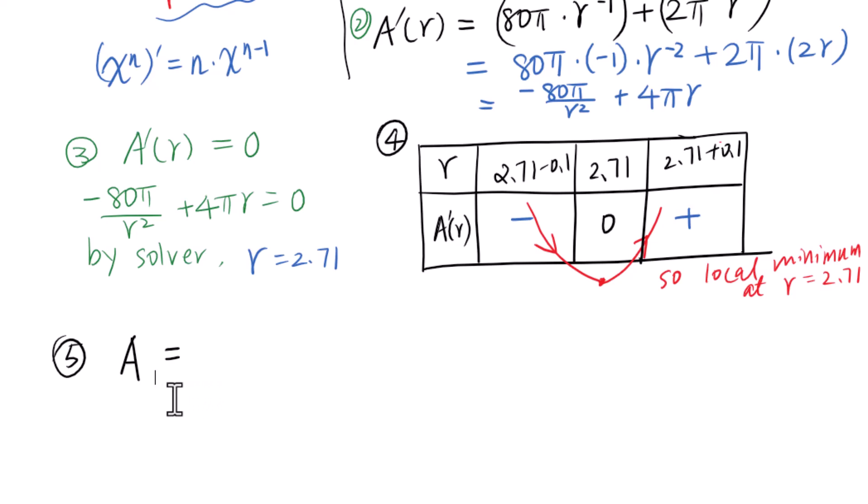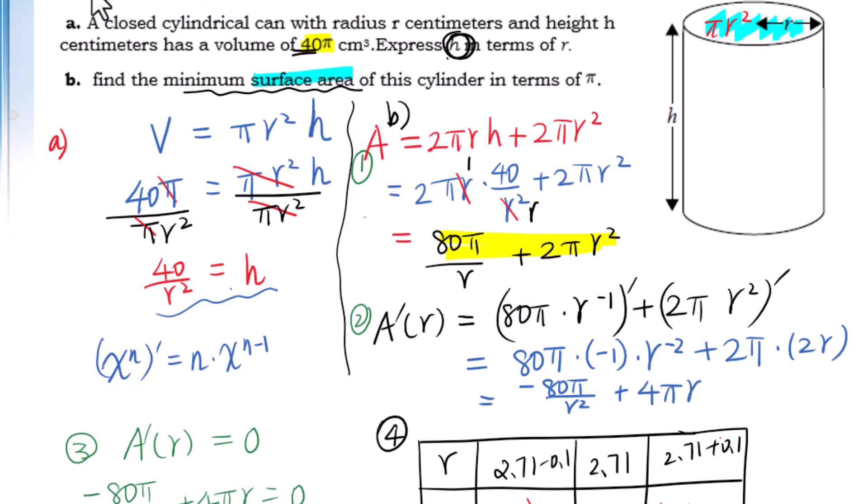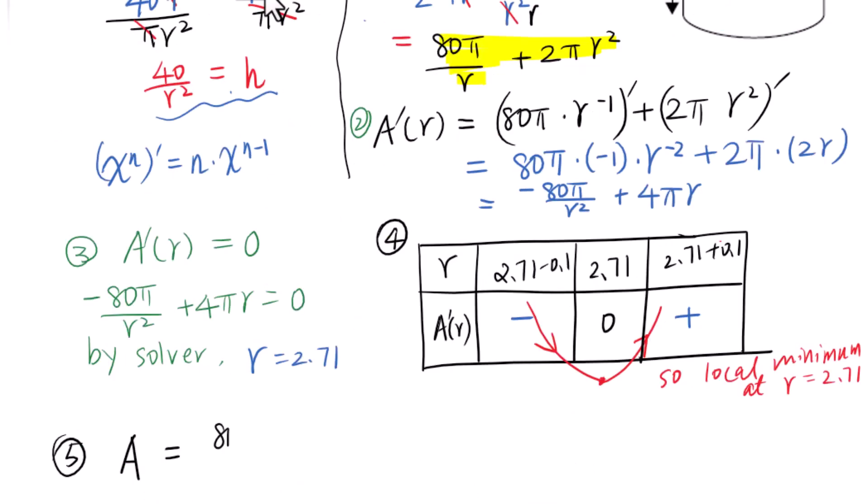Last step, we will figure out the minimum surface area of this cylinder using the formula. We need to show your answer in terms of π, which means π as a constant - do not change π into 3.14. Area equals 80π/2.71 plus 2π times 2.71².